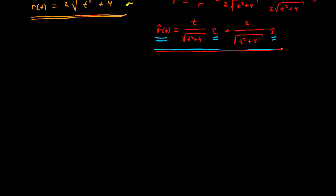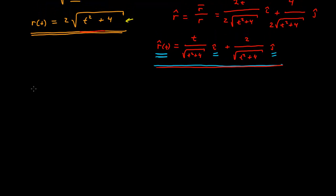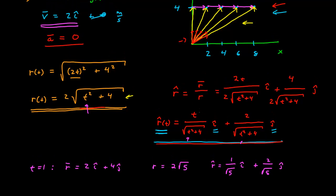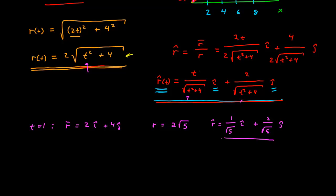Let's calculate that quickly. At t = 1, our position vector is 2î + 4ĵ. We can easily calculate the magnitude: it's 2√5, putting t = 1 into the formula gives 5 under the radical. Our unit vector is then 1/√5·î + 2/√5·ĵ. This unit vector points in the direction of the position vector at t = 1 second.